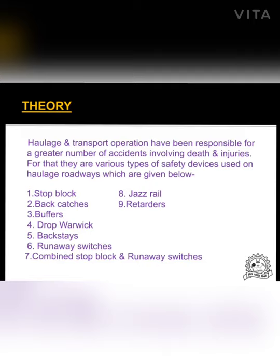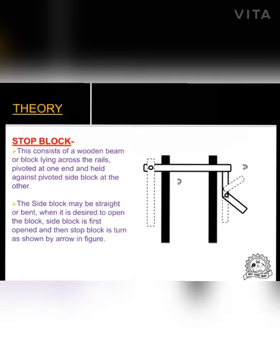Let us start with the stop block. A stop block consists of a wooden beam or block lying across the rail, pivoted at one end and held against the pivoted side. It consists of a wooden beam or block lying across the rail — one end is pivoted and the other end is held by the side block. The side block may be straight or bent, as shown in the figure.